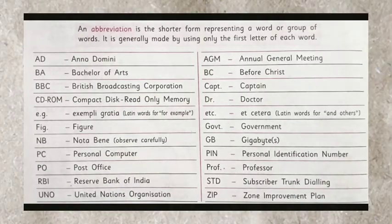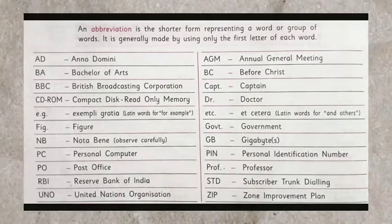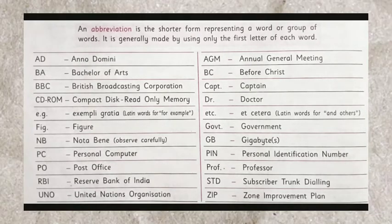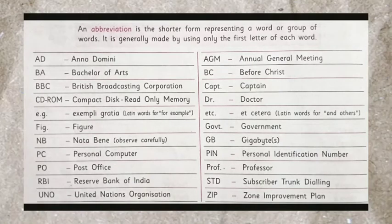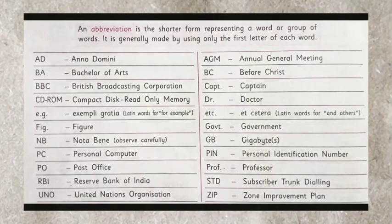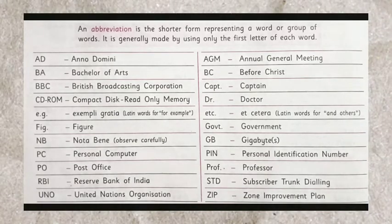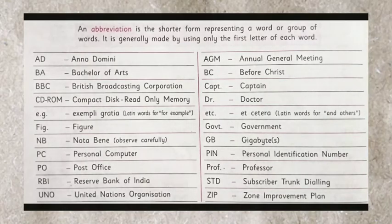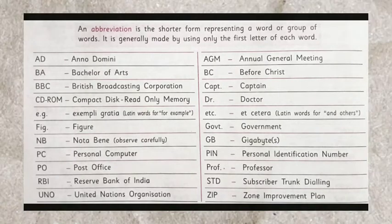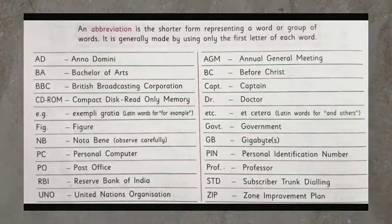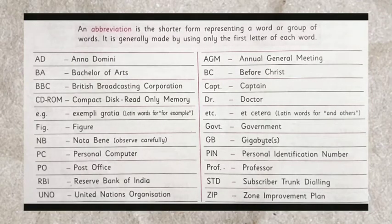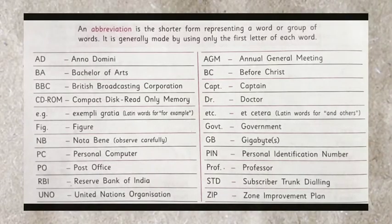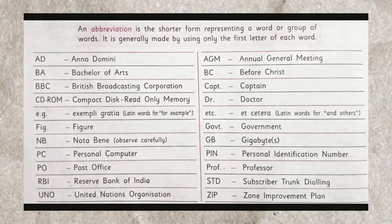Now we move on to abbreviations. An abbreviation is a shorter form representing a word or a group of words. Let's look at some common abbreviations: A.D. - Anno Domini; B.A. - Bachelor of Arts; P.C. - Personal Computer; P.O. - Post Office; R.B.I. - Reserve Bank of India; B.C. - Before Christ; Dr. - Doctor; S.T.D. - Subscriber Trunk Dialing.